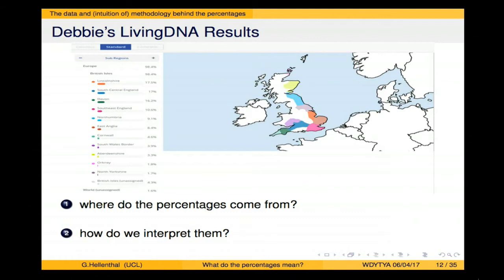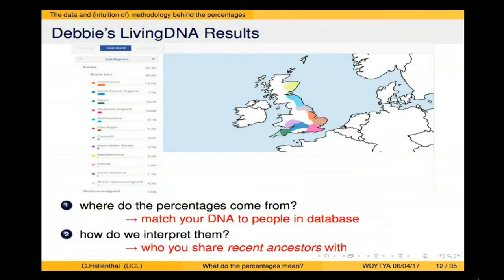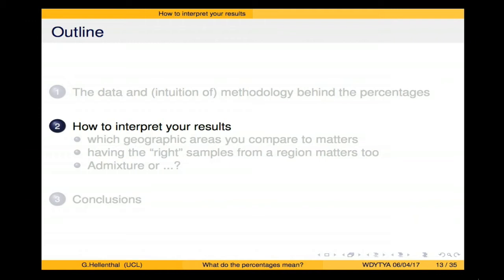Going back to Debbie: we took her DNA, compared it to individuals in our database, and saw she shares matches at particular proportions. The percentages reflect who you share recent ancestors with. At 17.5% of Debbie's genome, she most recently matched people currently in Lincolnshire; at 17% she matched people from South Central England. Importantly, this doesn't mean her ancestors came from these locations — we only know she's most closely related to people who live there now. A shared ancestor 20 generations back could have had descendants who migrated to Lincolnshire much later.